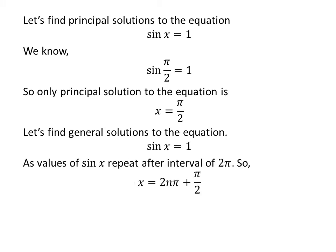Let us find the general solutions for the equation sin x = 1. As we know, the values of sin x repeat after the interval of 2π, so the general solution is x = 2nπ + π/2, where n is an integer. Further simplification gives us the general solution x = (4n+1)π/2.